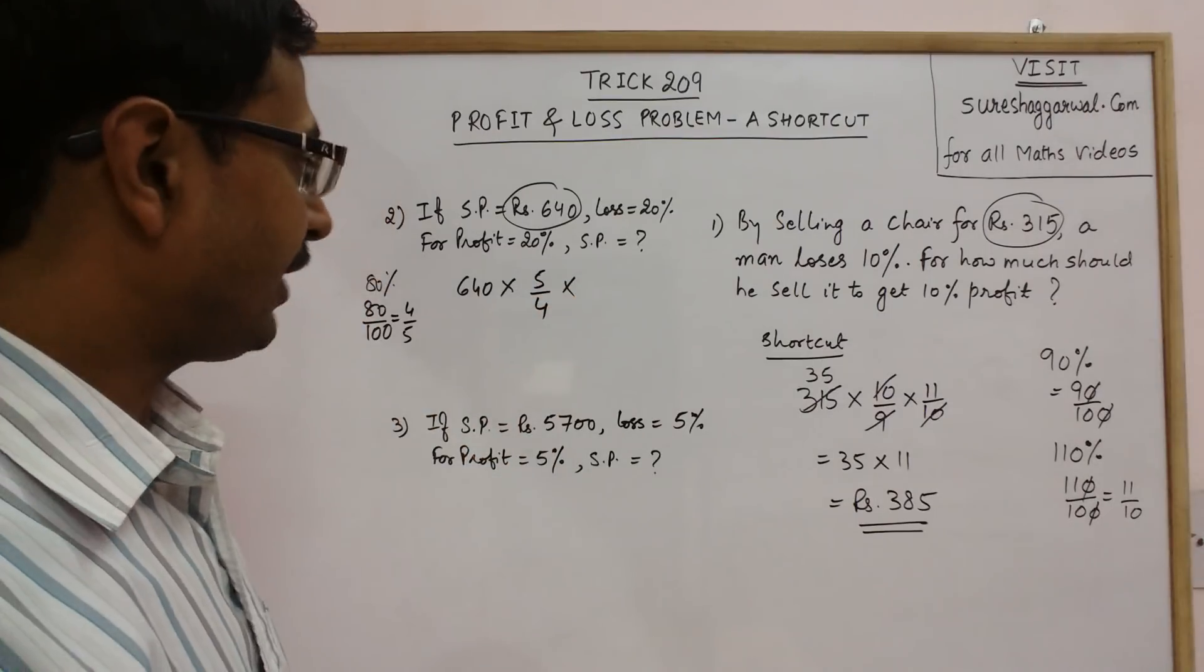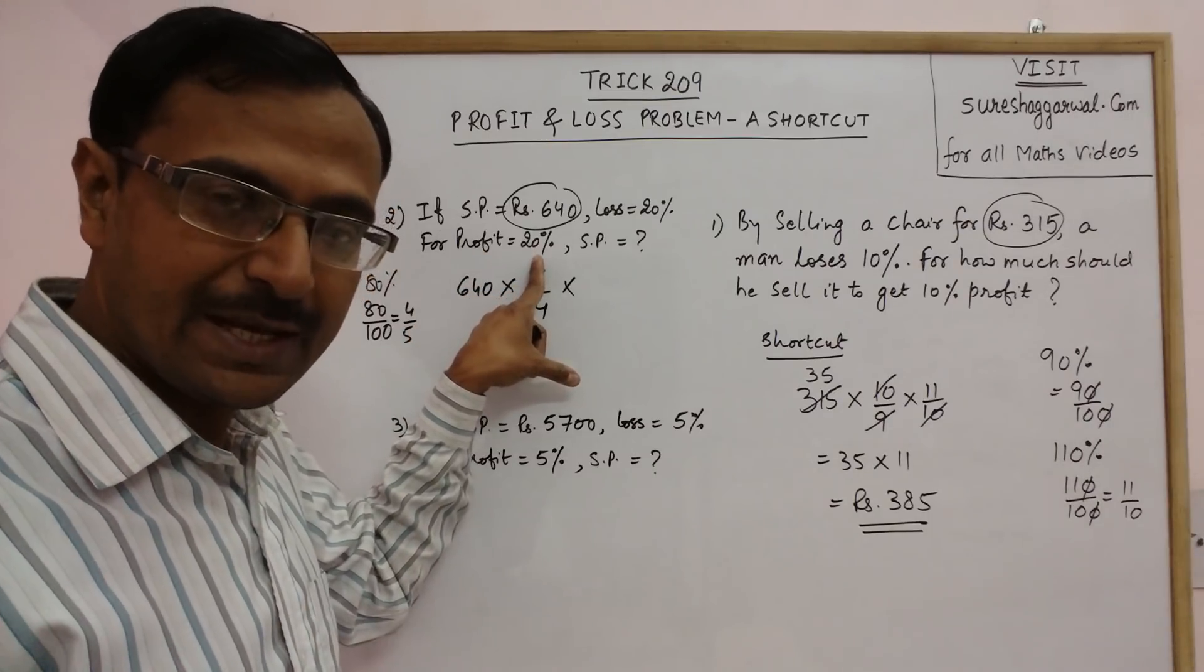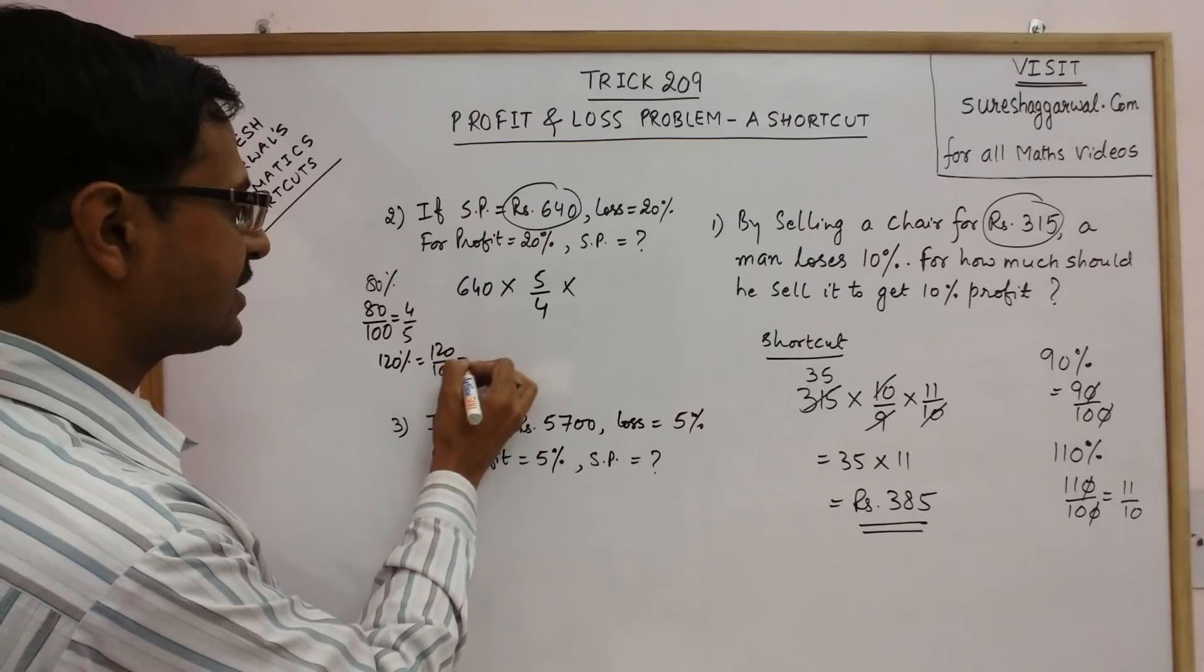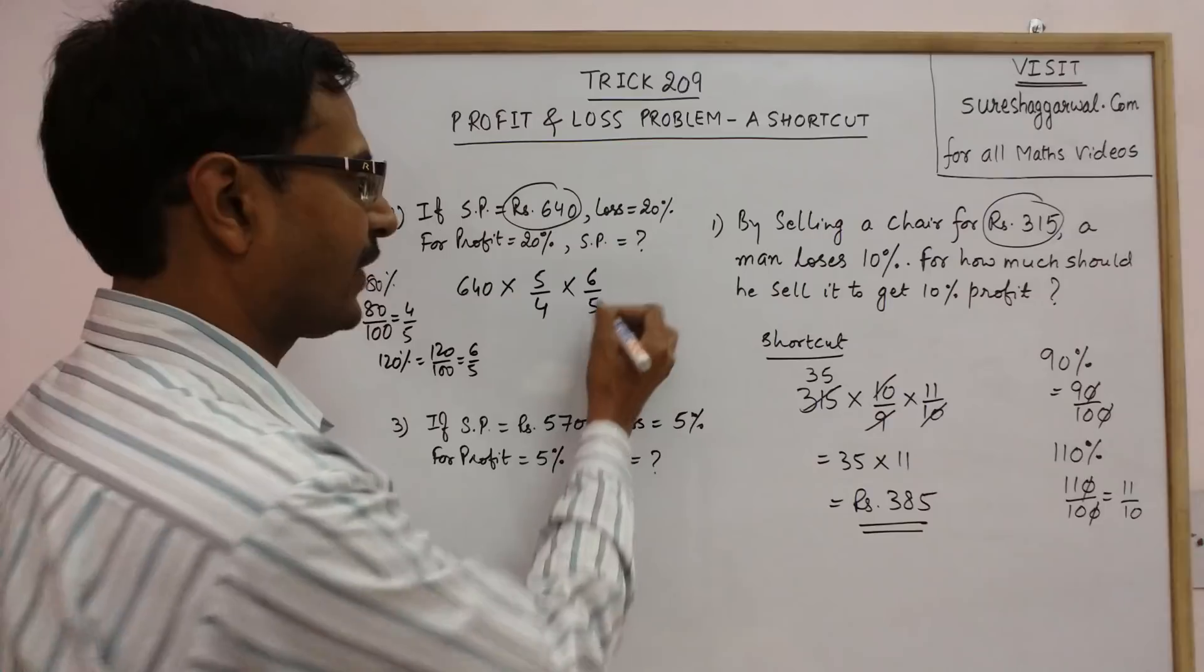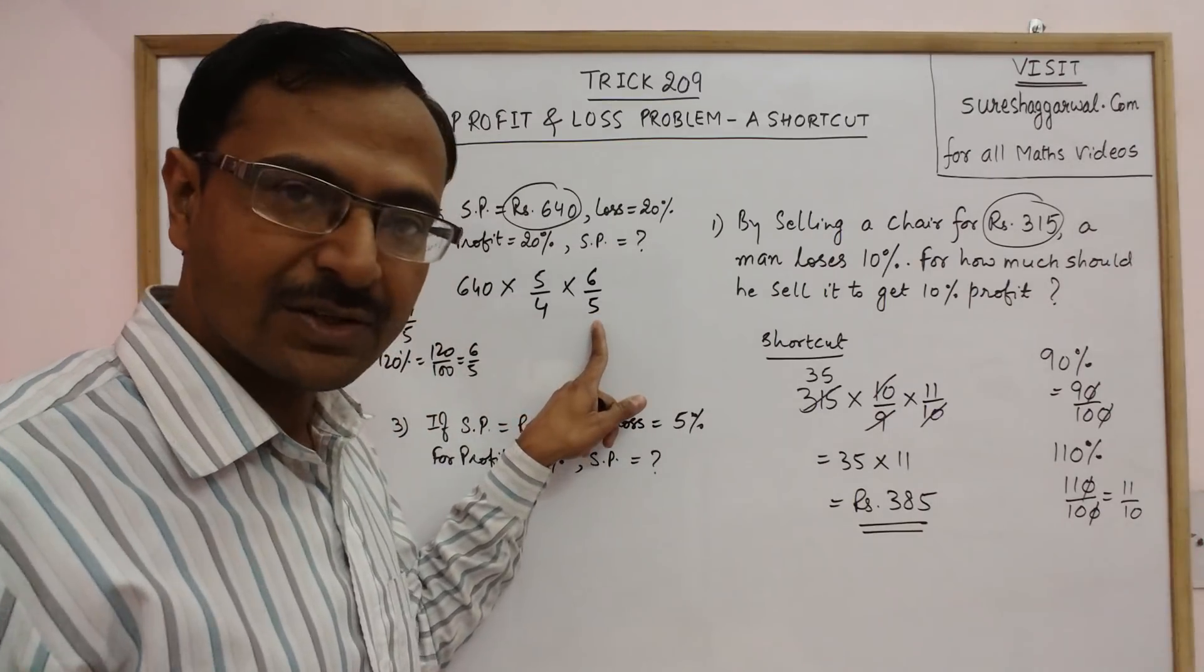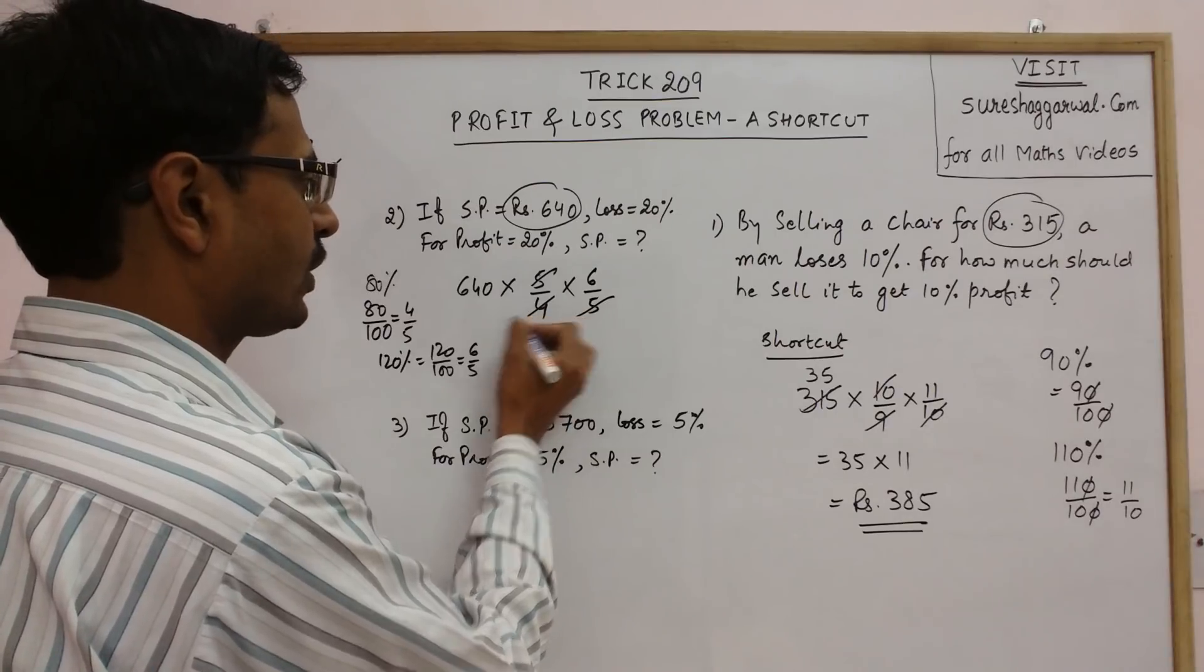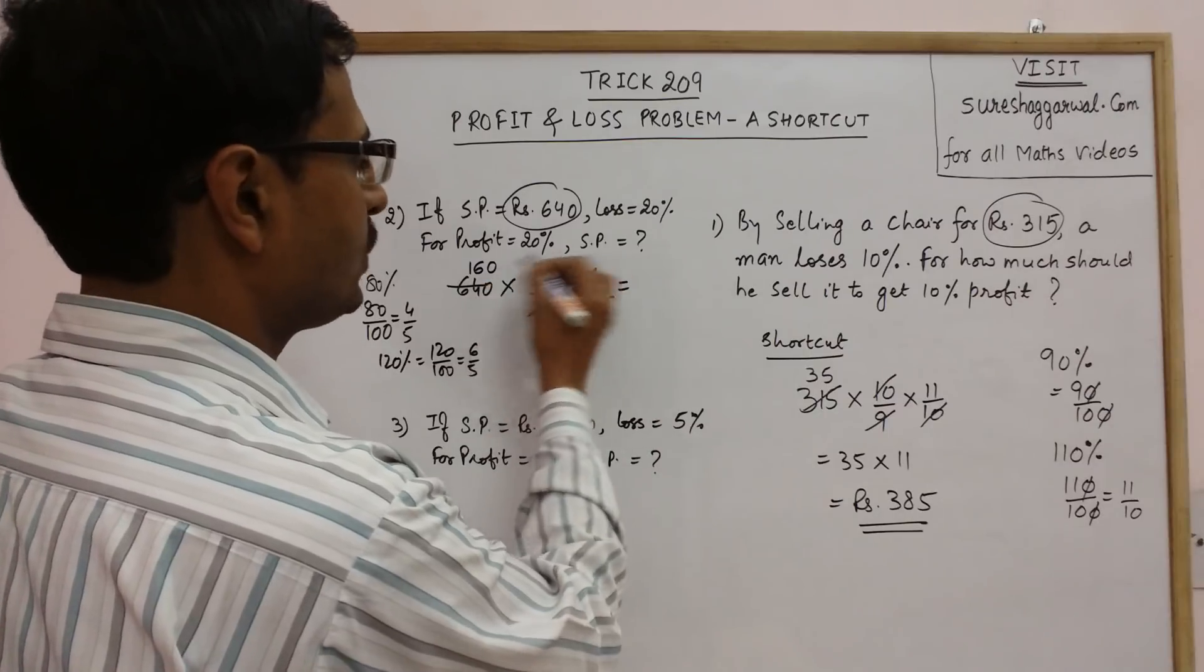Now the final part: we have profit of 20%, so 100 plus 20 equals 120%. Converting 120% gives 120 upon 100 which is 6 upon 5. So multiply by 6 upon 5. Remember, in the first fraction we take the reciprocal and in the second fraction we write as it is. The 5 gets cancelled, so 160 into 6 equals 960 rupees.